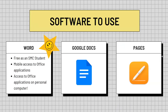So software to use when you are putting your references page together. There are a number of software tools you can use. First, we have Word, which is the one we recommend. It is accessible to you as an SMC student — you have access to the Office applications on your mobile phone and also on your personal computer. You can also use Google Docs and Pages, which is specific to Apple. But we recommend Word and I'll go over why in a bit.